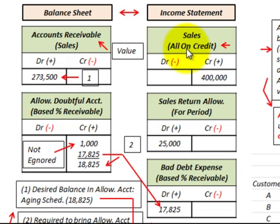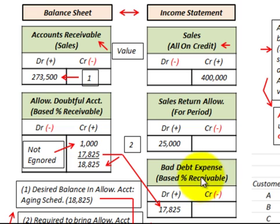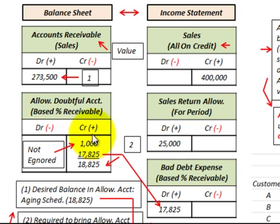On our income statement we'll have sales, sales returns and allowances, and then what we're really calculating here: bad debt expense. That's going to be based on the percent of receivables. Let's concentrate on this allowance for doubtful accounts — our bad debt account for the receivables that we're estimating.